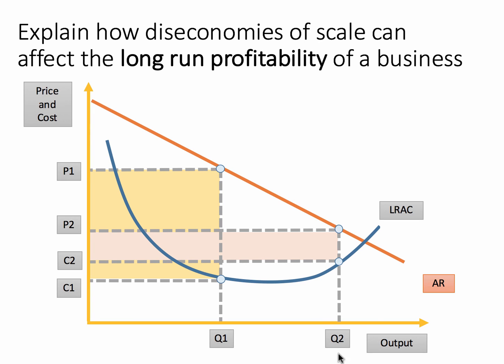But if a firm operates at Q2, a much higher output, the average cost in the long run is now rising — diseconomies of scale. Price is lower if you want to sell more goods and services, and cost is higher, so the profit per unit gets squeezed. P2 minus C2, shown as the light orange area, is the profit. The yellow area is bigger than the orange area, so diseconomies of scale cause the long run profits of a business to fall because they've moved beyond the optimum size of production.